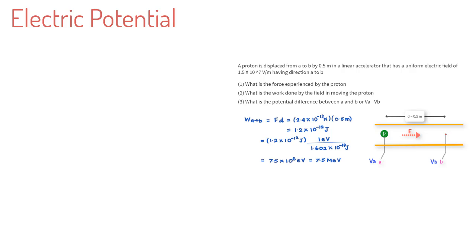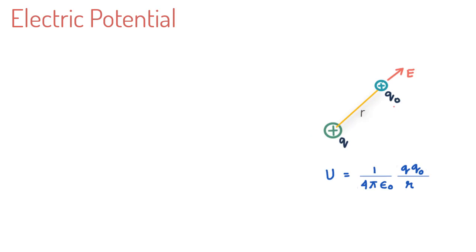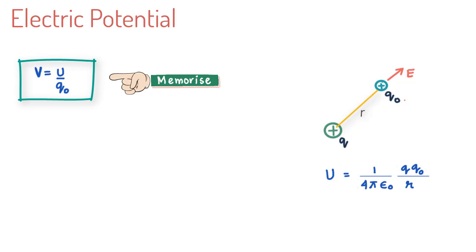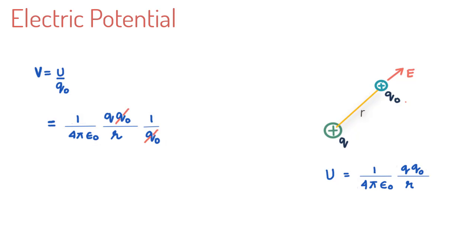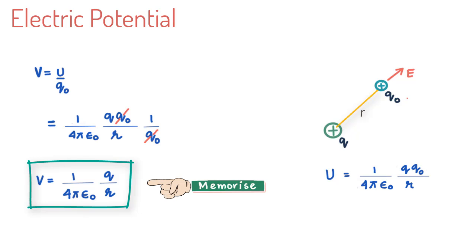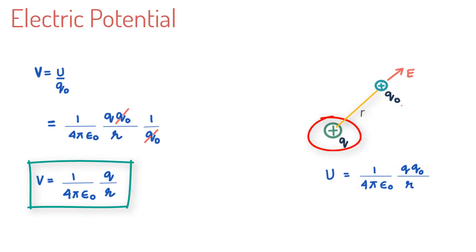Electric potential, or more often shortened to potential, is nothing but the potential energy measured per unit charge. The symbol we use to represent it is V, and it equals U divided by Q0. If you substitute U equal to (1/4πε) × QQ0/R, the charge Q0 suddenly vanishes from this definition. So a very important piece of information is that the potential at a point depends only on the charge that creates the field.